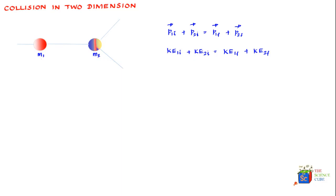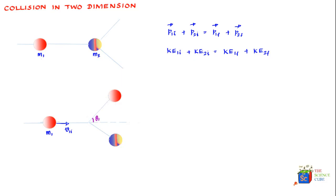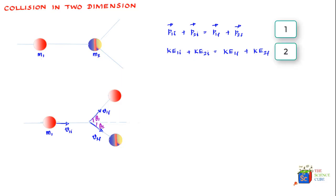The situation after the collision would be something like this: mass m1 was initially moving with velocity v1 initial. After the collision, m1 moves at an angle theta1, and its final velocity in that direction is v1 final. Mass m2 moves at an angle theta2 with final velocity v2 final.